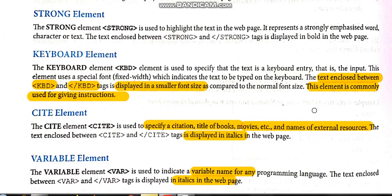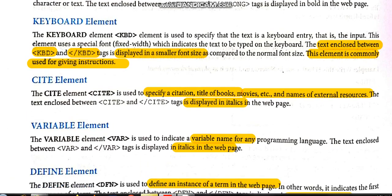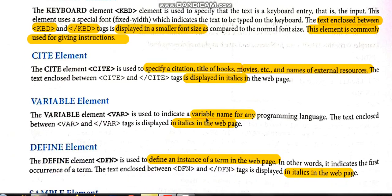Next is the variable element. The var tag is also used to write text in italics in the web page. Variable is used basically when writing programs in programming languages, where variables like x, y, z or names like 'subtraction' are used to store values. Those variable names can be written using the var tags — within the opening var tag and closing var tag — so those words are displayed in italics. If you see that particular font you will understand it is a variable name.